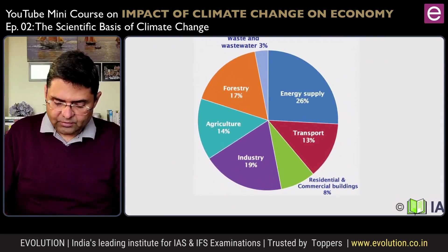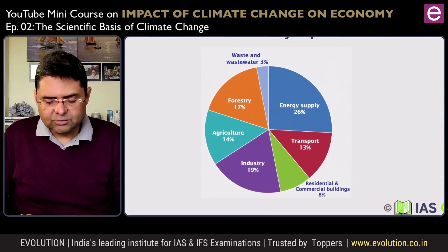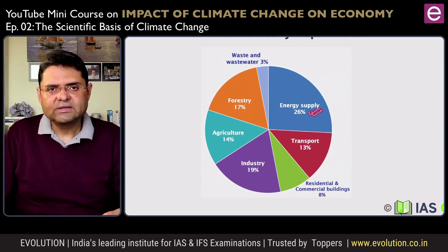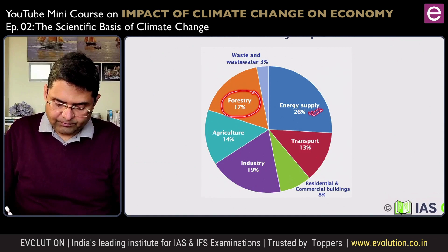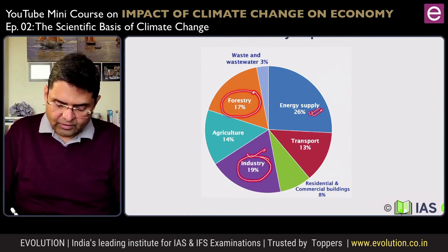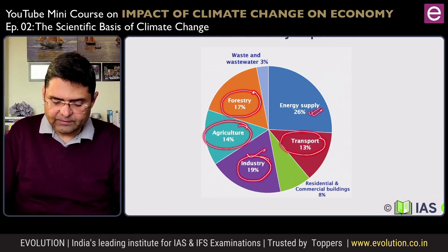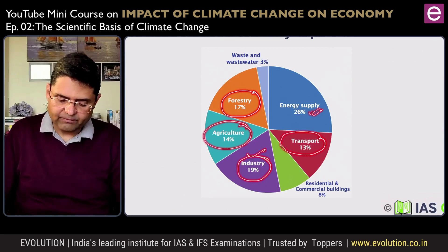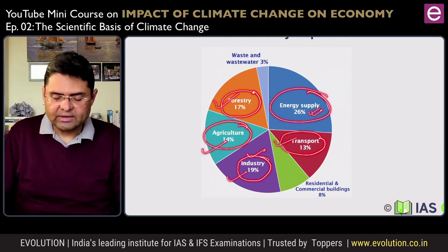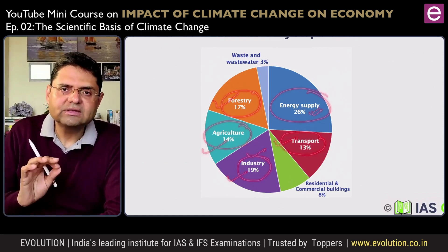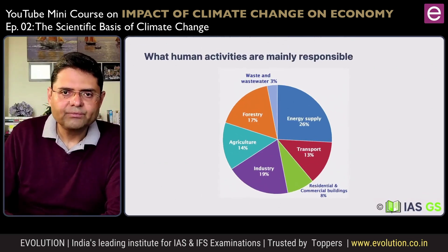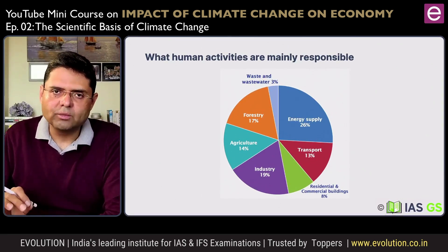What are the sources which contribute to the greenhouse effect? Energy supply is the biggest culprit at 26 percent. Industries also contribute 19 percent, followed by forestry, agriculture and transport. These are the biggest five human activities — energy supply, industry, forestry, agriculture and transport — which contribute to the greenhouse effect and thereby contribute to global warming.